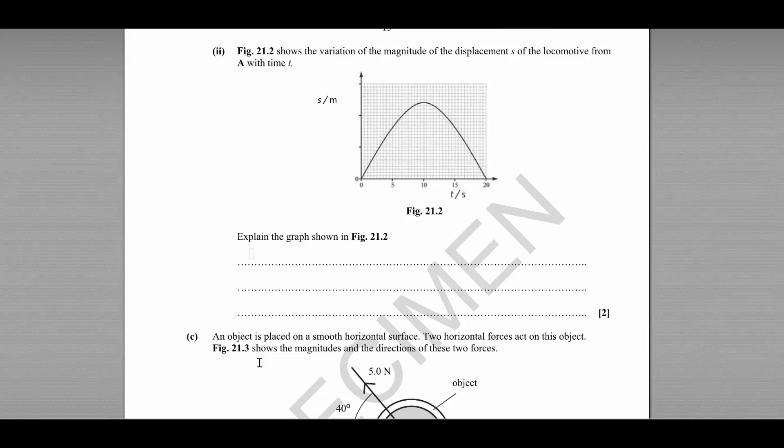Part ii shows us a displacement-time graph of the locomotive compared to its original position at point A. We need to be able to explain the shape of that graph. Well, displacement is the straight line distance from A.